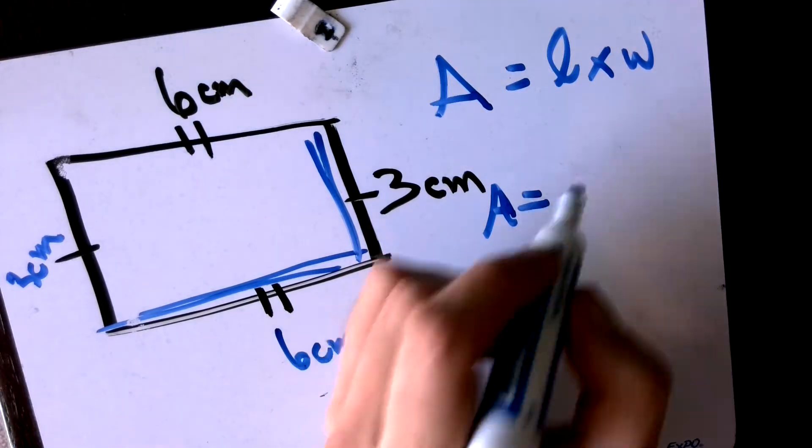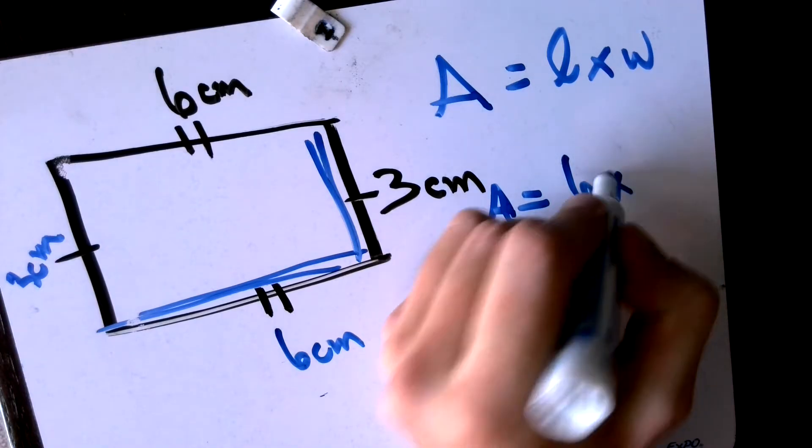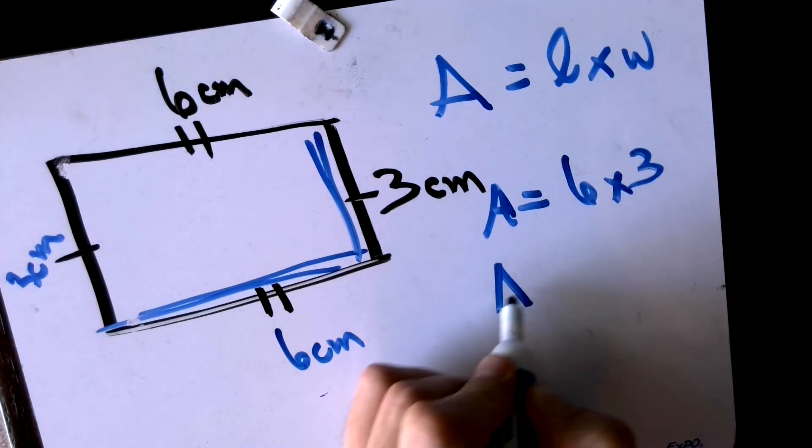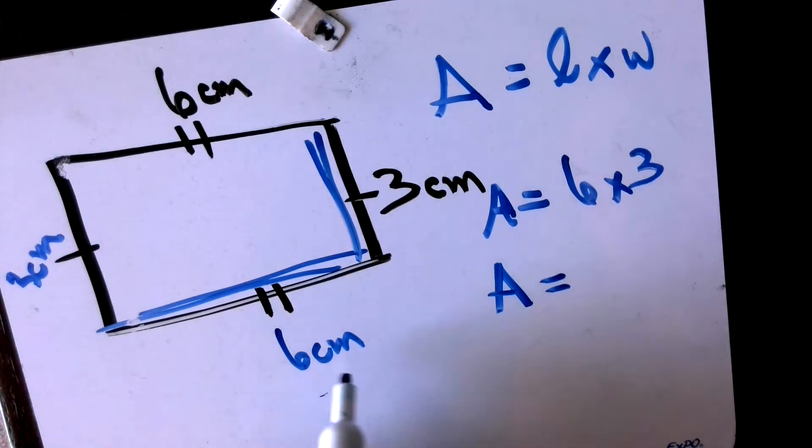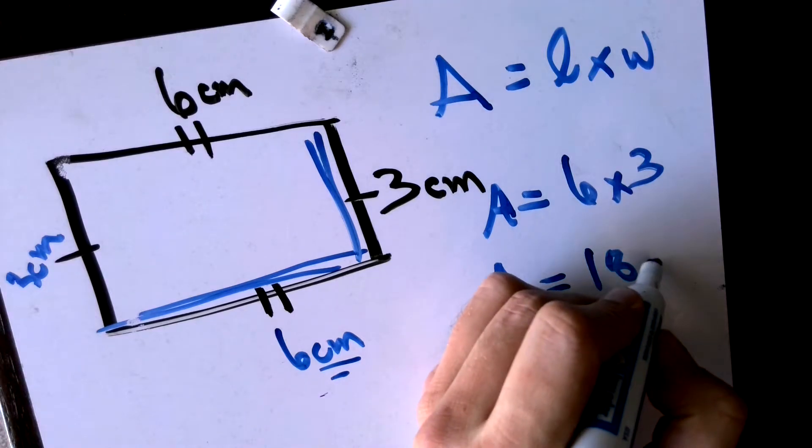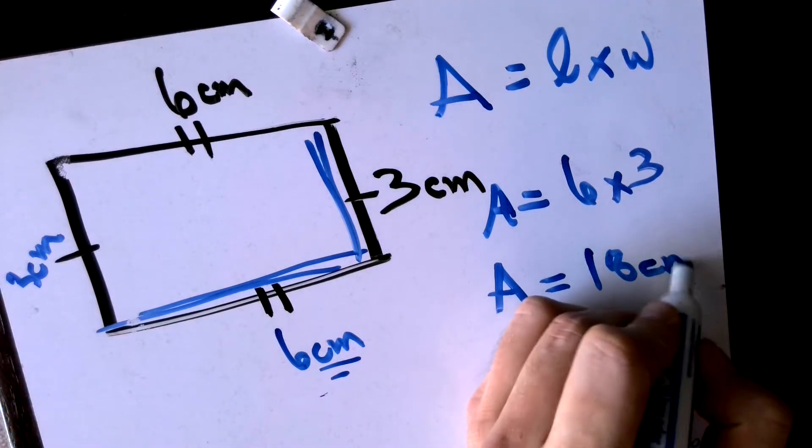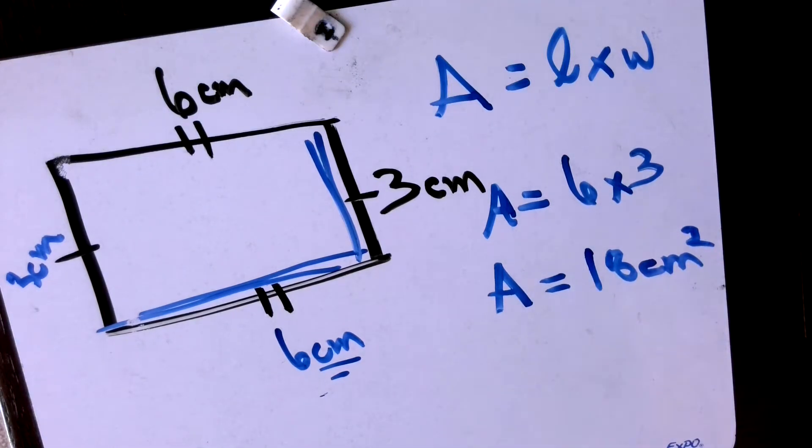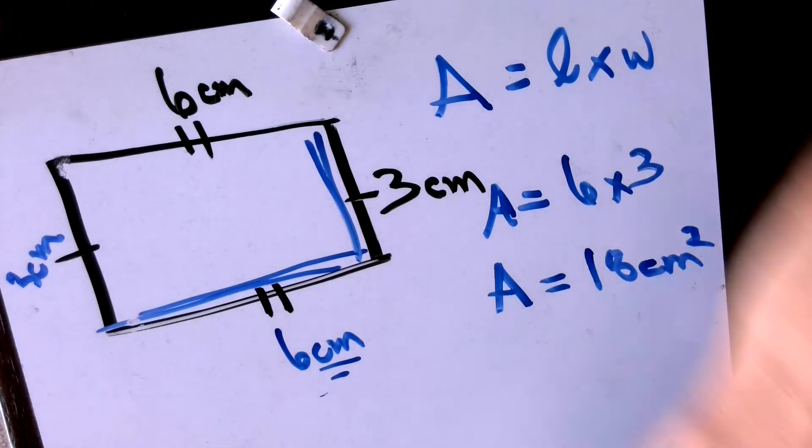So area equals length, which is six times, well, my width was three. My area is equal to, I have to keep in track with my units, 18 centimeters. Since it's area, centimeters squared, because we know that area is calculated in units squared.